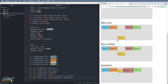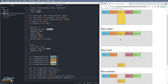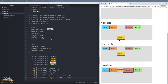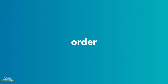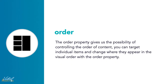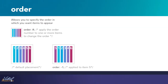AlignSelf allows you to tweak the placement of individual items within their containing element, despite any alignItems value that may be applied. Now let's talk about the order property. The order property gives us the possibility of controlling the order of content. You can target individual items and change where they appear in the visual order by using the order property.